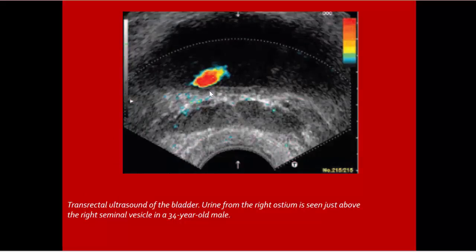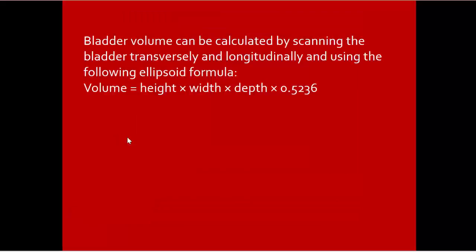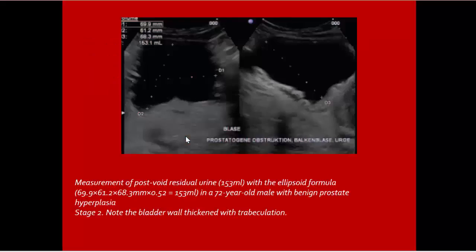Transducer ultrasound of the bladder with color Doppler study. Bladder volume can be calculated by scanning the bladder transversely and longitudinally using the formula: volume equals height times width times depth multiplied by 0.52. Measurement of post-void residual urine uses the same formula: transverse times longitudinal times AP dimension multiplied by 0.52.